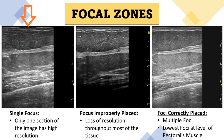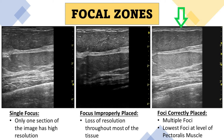In the first image, only a single focus is used, meaning only one section of the image has high resolution. In the next image, the single focus is improperly placed — it's too high in the image, resulting in a loss of resolution throughout most of the tissue and the deeper breast tissue is not visualized at all. In the last image, the foci are correctly placed, with multiple foci and the lowest focus at the level of the pectoralis muscle.